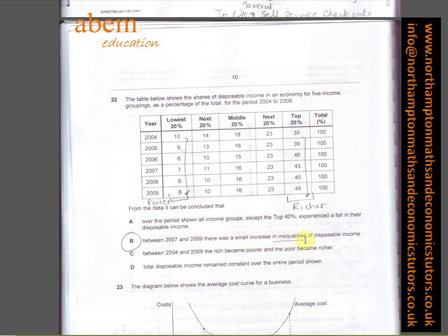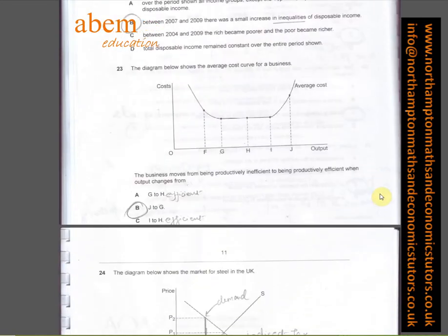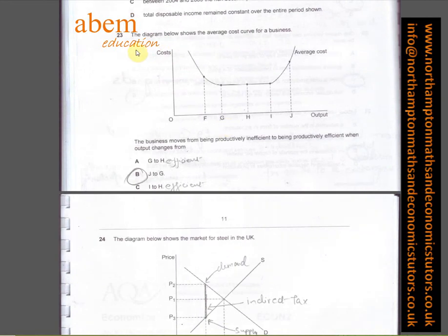Question number twenty-two. I've put B: between 2007 and 2009 there was a small increase in inequalities of disposable income. If you look here, the top 20% share of income has gone up from 35 to 45, so they've become richer. On the other hand, the lowest 20% share of income has gone from 10 to 6, so they've become poorer.